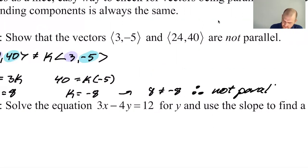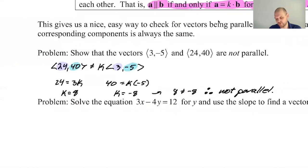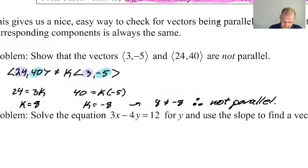8 does not equal negative 8, therefore they're not parallel. They were close, though. If we changed the sign of the negative 5 or the sign of the 40, they would have been parallel. But they're not. The fast way that I do it is I immediately will look at 40 divided by negative 5 is negative 8, and then I will immediately look at 24 divided by 3 is positive 8. Not the same number, not parallel.